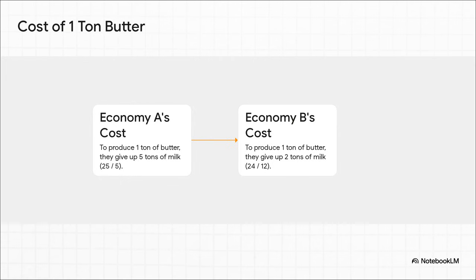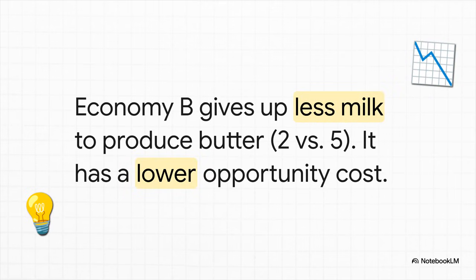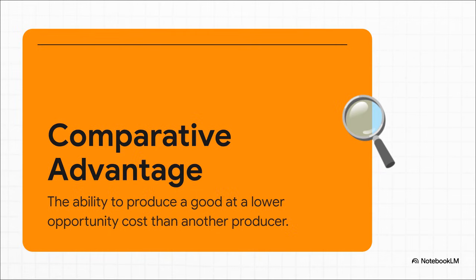Let's run the numbers. For economy A, making those five tons of butter means they don't make 25 tons of milk. So if we divide 25 by 5, the real cost of one ton of butter is five tons of milk. Now for economy B: to make 12 tons of butter, they give up 24 tons of milk. Divide 24 by 12, and their cost for one ton of butter is only two tons of milk. This is the light bulb moment. Economy B isn't just better at making butter — it's also way more efficient. It only gives up two tons of milk to get a ton of butter, while economy A has to give up a staggering five tons. That right there is the entire definition of comparative advantage: it's all about being the most efficient, the one who has the lowest opportunity cost.